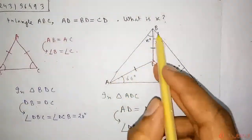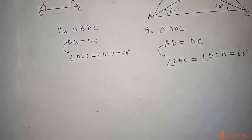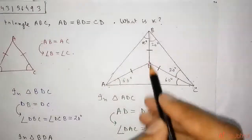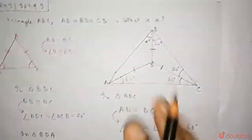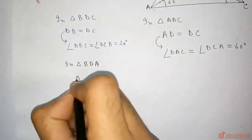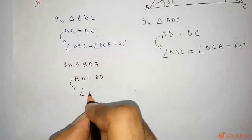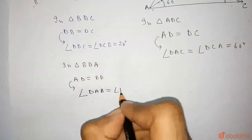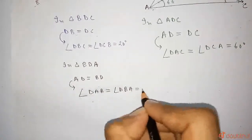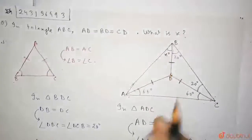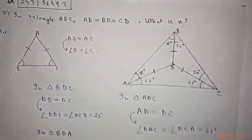In triangle BDA, we can see that AD is equal to BD, so this angle will be equal to this angle. Therefore, angle DAB is equal to angle DBA, which is equal to X degrees.